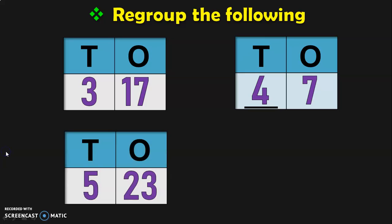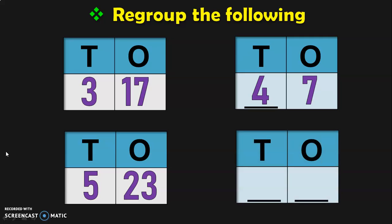Let us do another sum. Here we have 23 ones and 5 tens. 23 ones can be written as 2 tens plus 3 ones. Retain the 3 ones in the ones place and take the 2 tens to the tens place. In the tens place you already have 5, so 5 plus 2 gives you 7. You will have 7 tens and 3 ones. Cross-checking: 50 plus 23 is 73. When you regroup it properly, it is 7 tens plus 3 ones, which is 73.